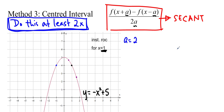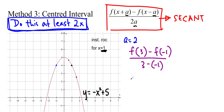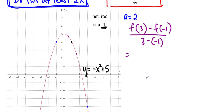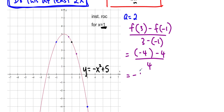We're just going to plug this number into the equation. So a equals 2, meaning f of 1 plus 2, which is f of 3, minus f of 1 minus 2, which is f of negative 1, over 3 minus negative 1. I'm going to use the graph for these two points since it's quite accurate. f of 3 is about negative 4, and f of negative 1 is about 4, over 3 minus negative 1 equals 4. So that gives me negative 8 over 4, which is negative 2.